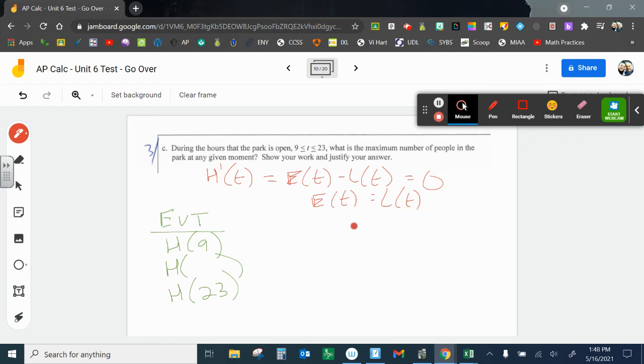And then once I know my end points of the interval and any places of potential min or max when the derivative is 0 or undefined, that's where the values of max and mins, the extreme values will occur. So we said when I put 9 in, I'm going to get 0. When I put in 23, I'm going from 9 to 23, and I'm going to use my calculator for this, of E(T) minus L(T). So you already have all this in, and hopefully this is all calculator work here.